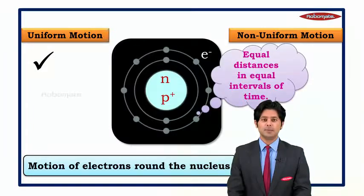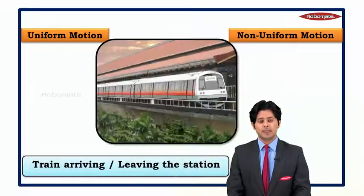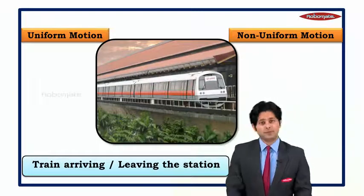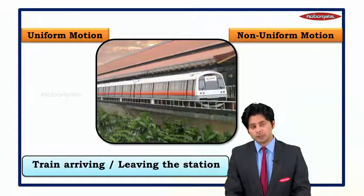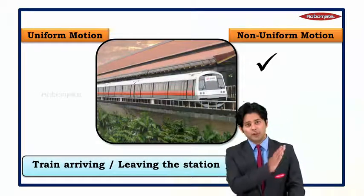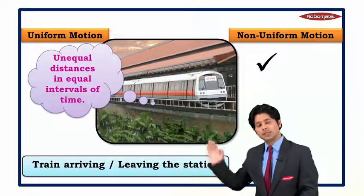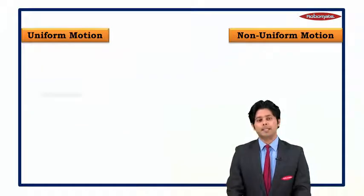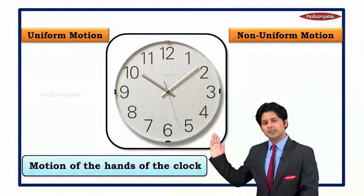Moving to the next example: a train arrives and departs from a platform. Is this an example of uniform or non-uniform motion? The answer is obviously non-uniform motion, because it covers unequal distance in equal interval of time.